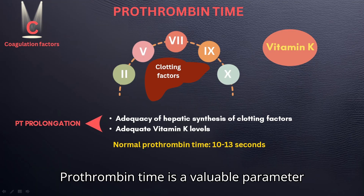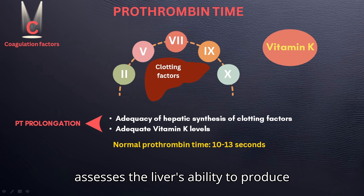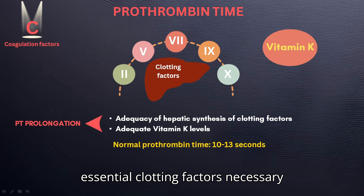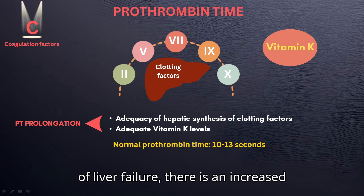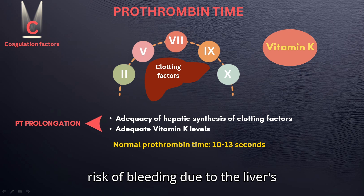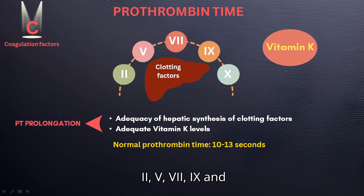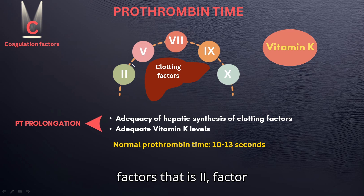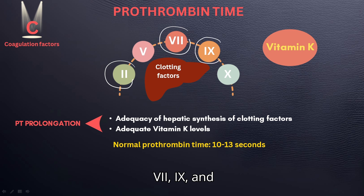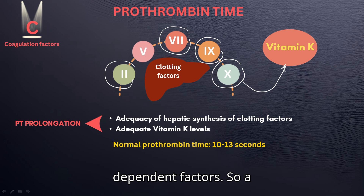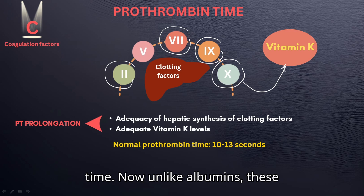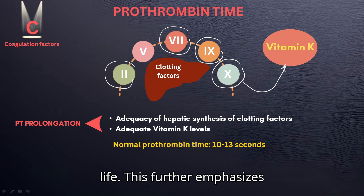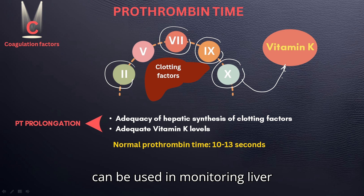Prothrombin time is a valuable parameter for evaluating liver function as it assesses the liver's ability to produce essential clotting factors necessary for proper blood coagulation. In cases of liver failure, there is an increased risk of bleeding due to the liver's inability to synthesize factors like factor 2, 5, 7, 9, and 10. It's also important to note that factors 2, 7, 9, and 10 are vitamin K dependent. A deficiency in this vitamin can also lead to a prolonged prothrombin time. Unlike albumin, these clotting factors have a shorter half-life, emphasizing the critical role of prothrombin time in monitoring liver health.